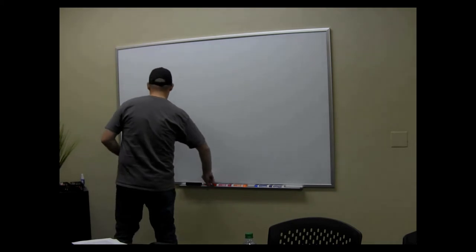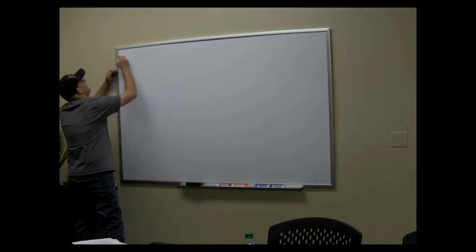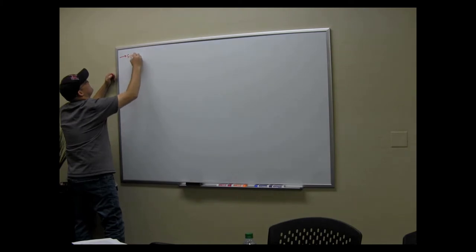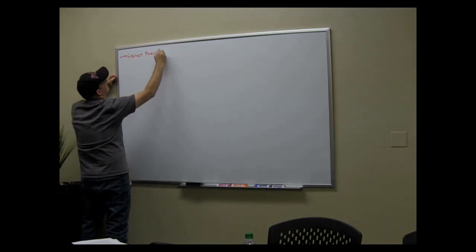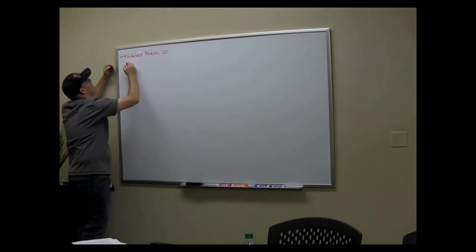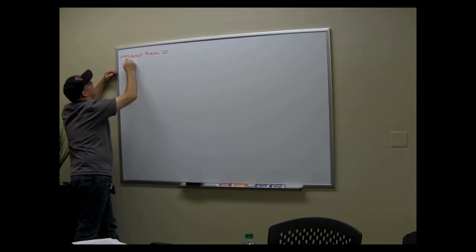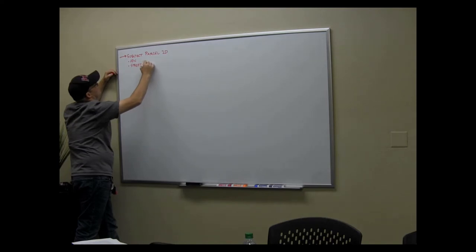Okay, so the very first section of the notes is the subject parcel ID, because we want to know what are we surveying. So what I want in there is APN, street address. If there's more than one street address, just pick the main one.